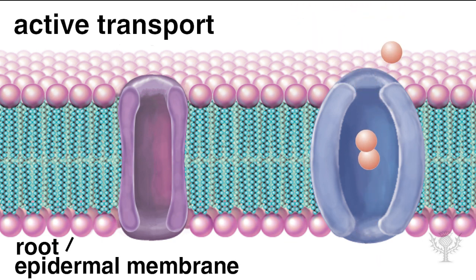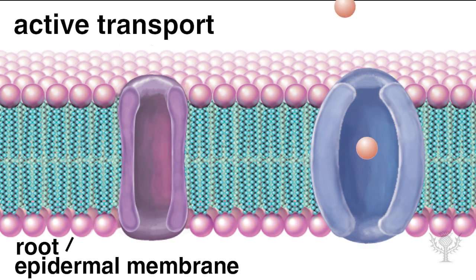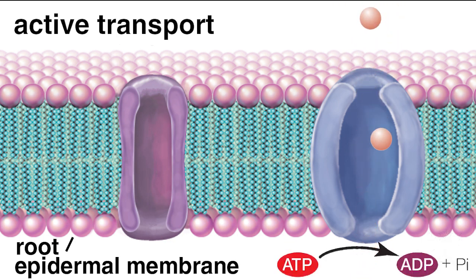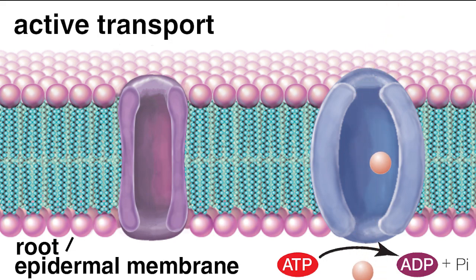depending on the needs of the plant. Active transport requires energy, as the required molecules must be pumped across the membrane against their concentration gradient.